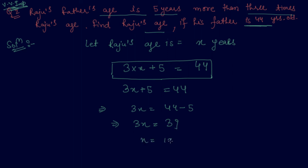So x will come out to be 13. 39 by 3 is 13. So Raju's age is 13 years. You can also cross verify your answer by checking the statement. If I multiply 3 into 13 which is 39 plus 5 will be 44, so our answer is right.